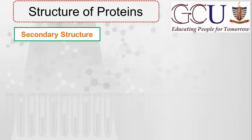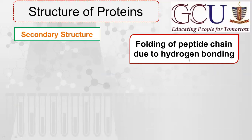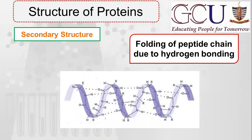Now let's look at the secondary structure of protein. Secondary structure is the folding of the peptide chain. This folding occurs due to hydrogen bonding. The primary structure had only peptide bonds; now in the secondary structure, folding has begun — because of hydrogen bonding. As you can see here, hydrogen bonds are formed between residues. These are shown as dotted lines, representing hydrogen bonds. So the chain folds and coils — this is folding, and it is due to hydrogen bonding.